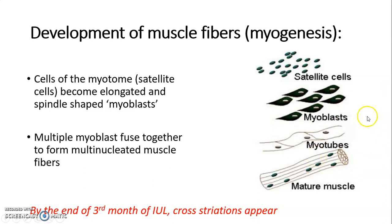These myoblasts fuse together to form myotubes. These myotubes further fuse together to form multi-nucleated muscle fibers. By the end of the third month of intrauterine life, cross striations appear in these skeletal muscle fibers, which are the characteristic feature of skeletal muscle.